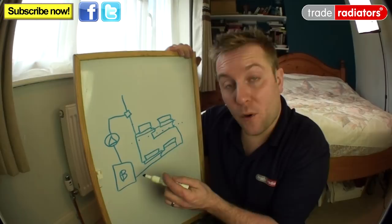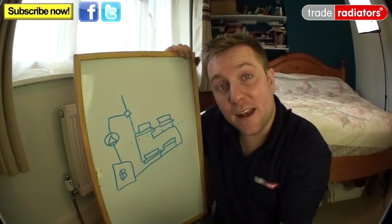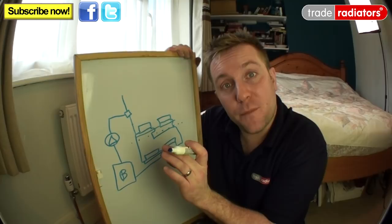So what we do is we go to what's called the lock shield end of the radiator, shut that all the way down, and then give it a quarter or half a turn back open again.